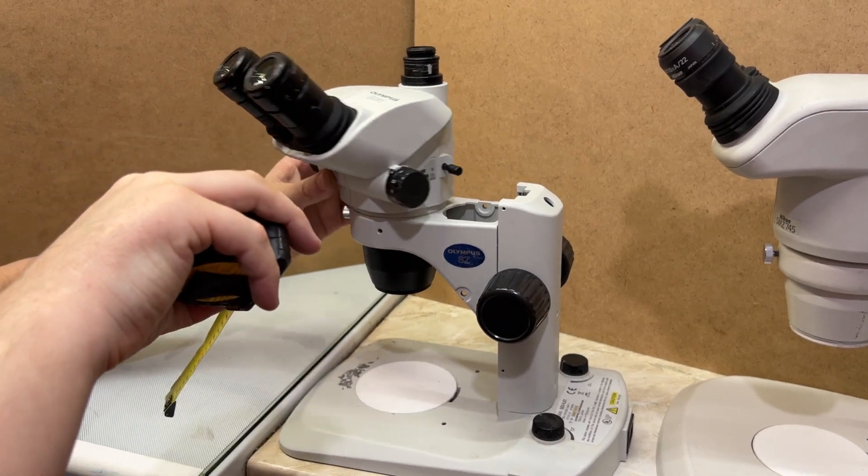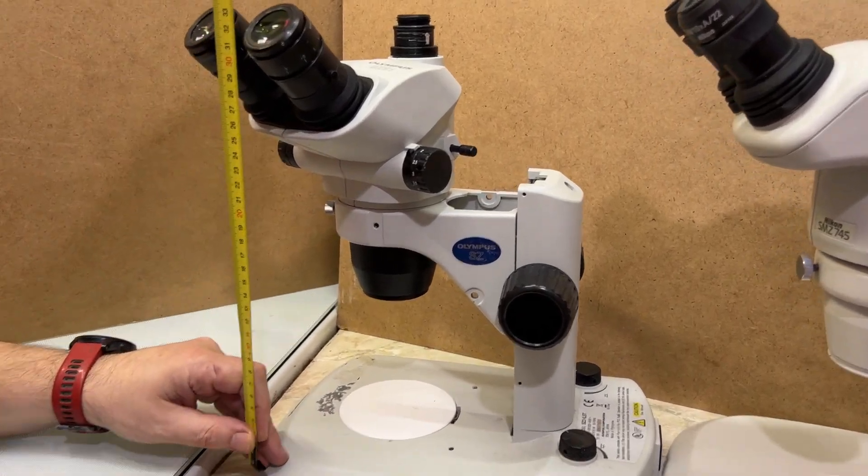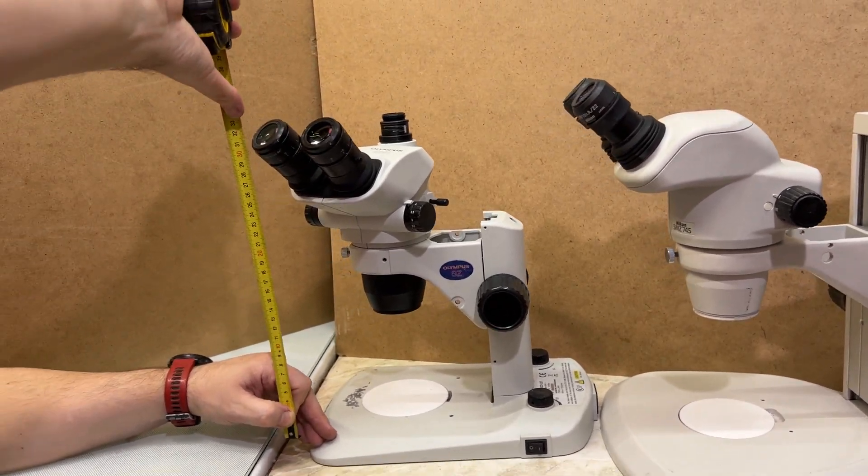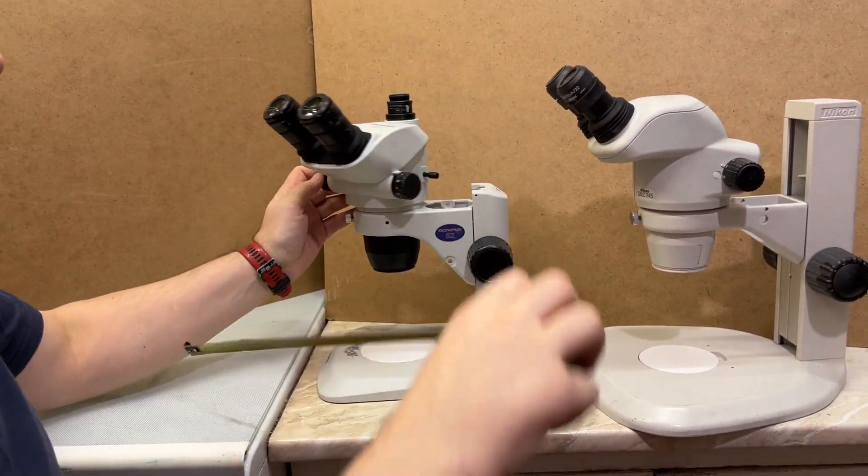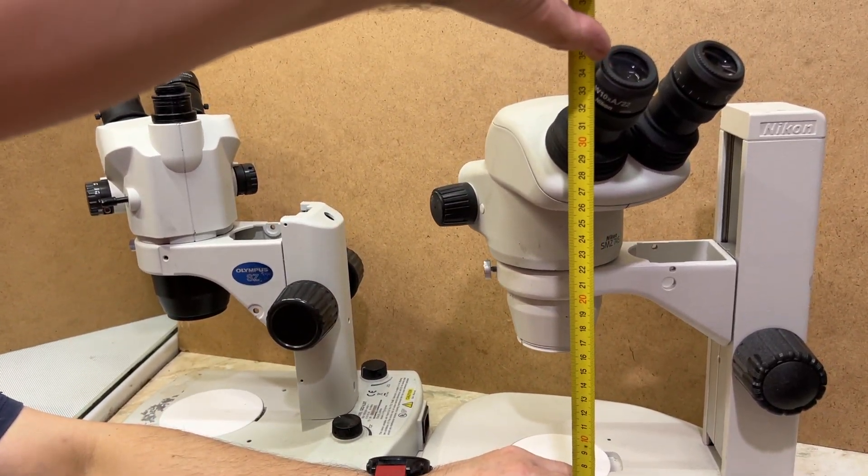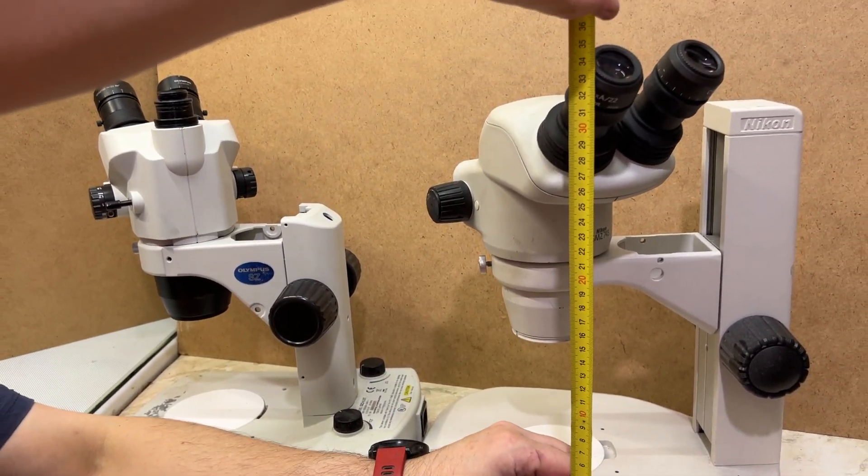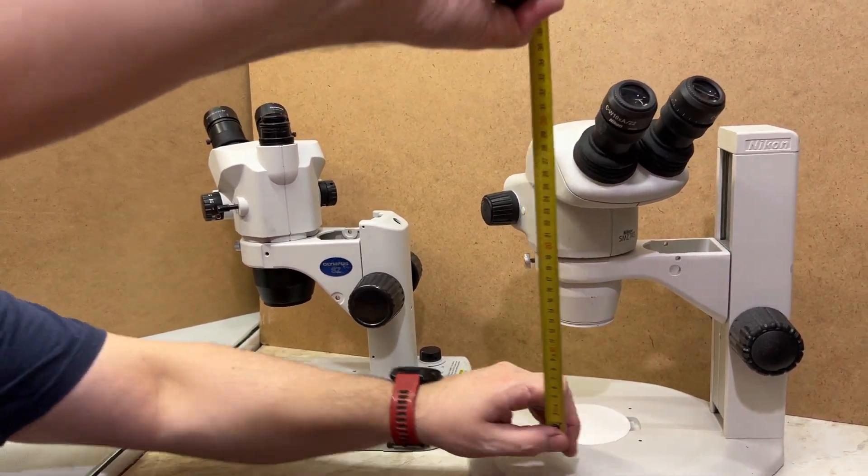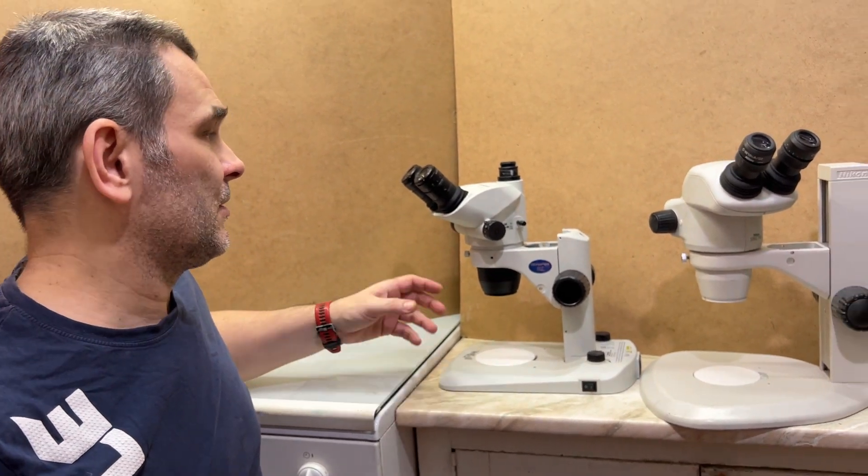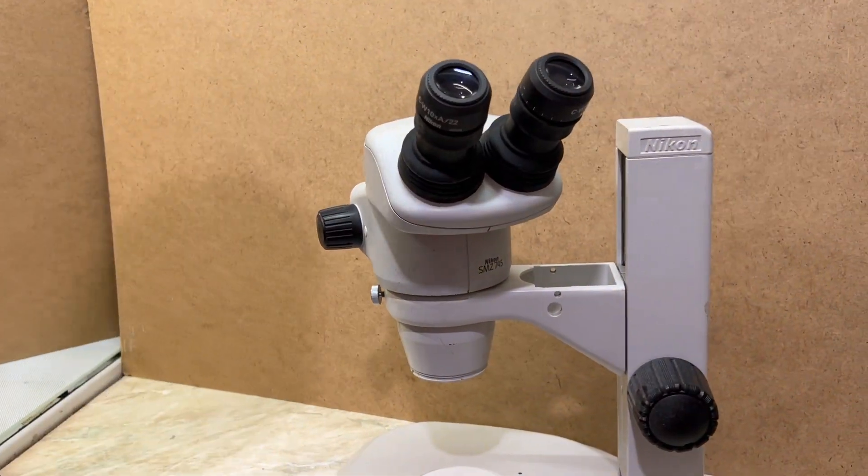If we look at the Olympus and measure the distance from the top length to the working space, we have about 32 centimeters. If we compare that to the Nikon, we can see about 34 and a half centimeters distance from the working plane to eyepieces. These two microscopes are not that high but not that short positioned either.